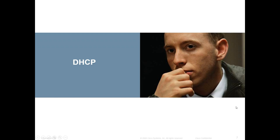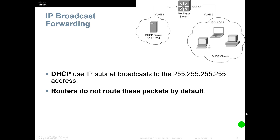Now let's talk about DHCP. DHCP uses an IP subnet broadcast to the 255.255.255.255 address. Keep in mind that routers do not route these packets by default, so some form of broadcast forwarding mechanism must be in place. The broadcast forwarding feature supports more than just DHCP and can also forward other UDP broadcasts.